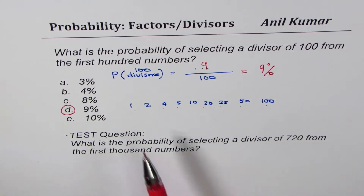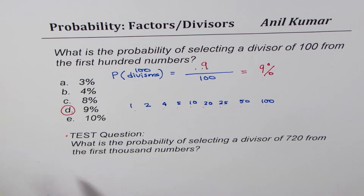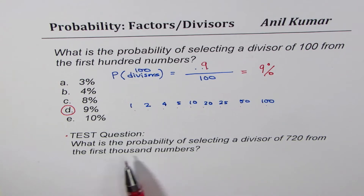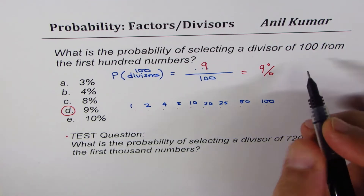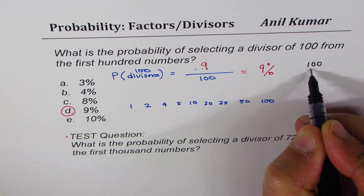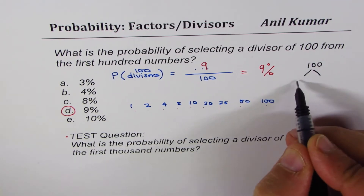In the case of 100 it was simpler. But for the test question — what is the probability of selecting a divisor of 720 from the first thousand numbers? — you could do the same factorization, but it may take a long time. The idea is to find a method that gives a quick solution. The method is: take the number and do prime factorization.